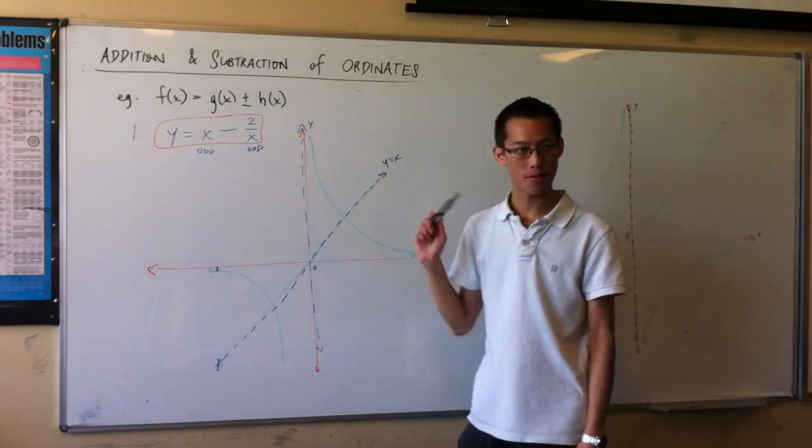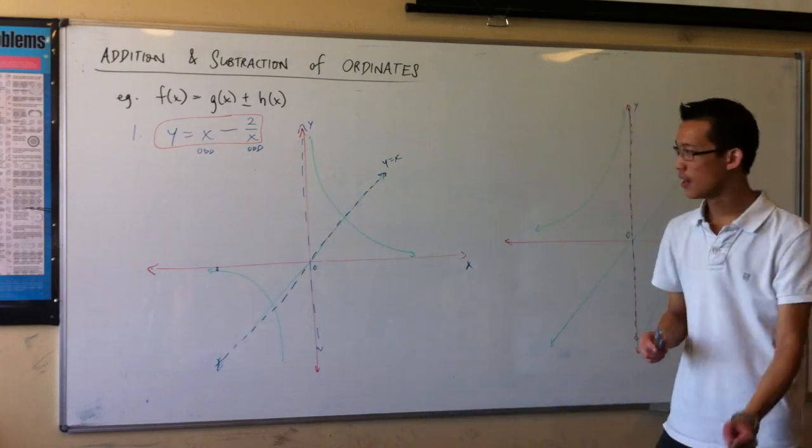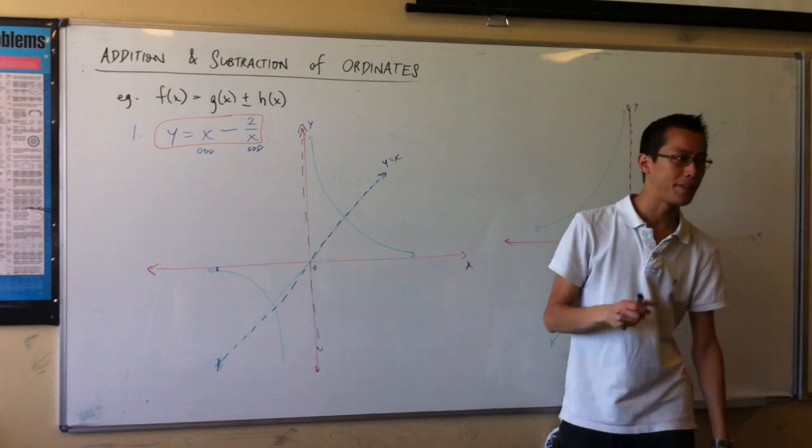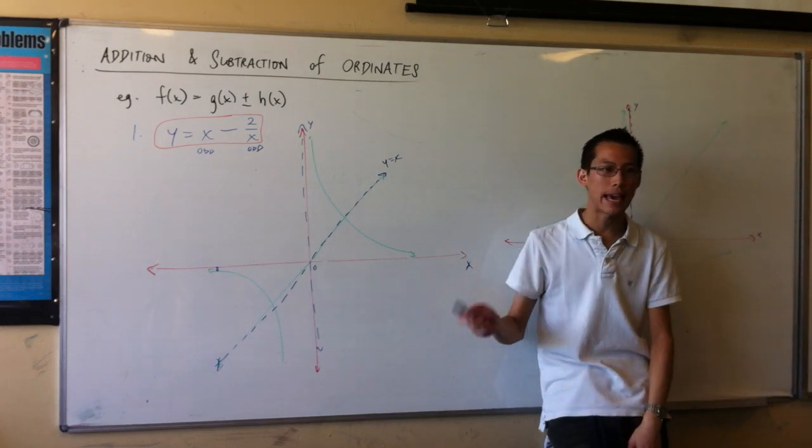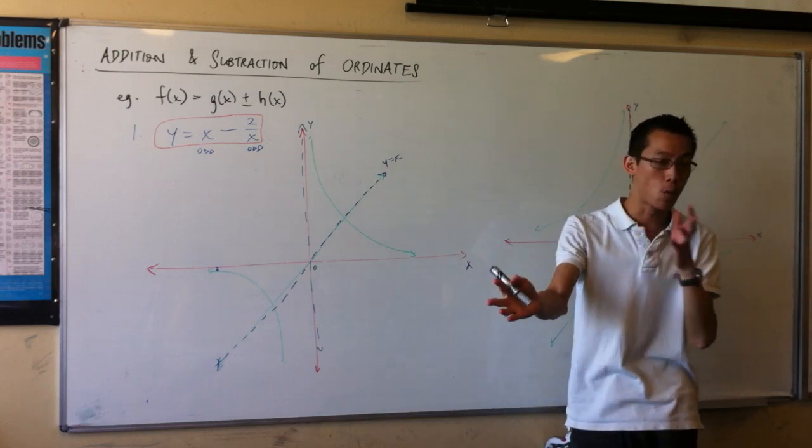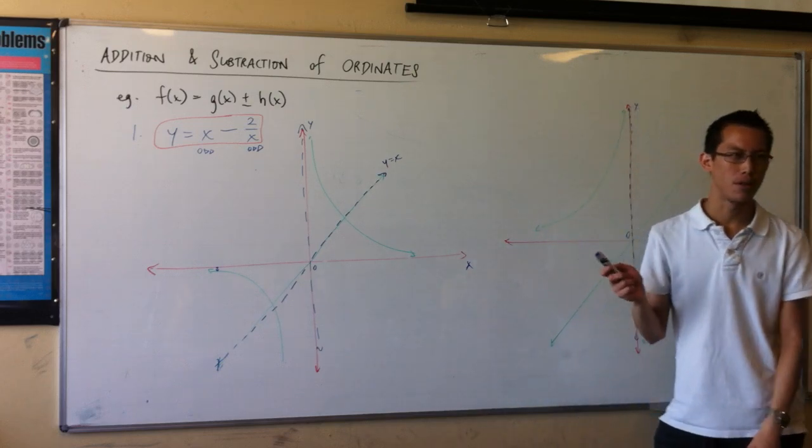We can graph this one, y equals x minus 2 over x, in two ways. I'll show you both. Usually when I show you multiple methods, I sort of tell you I prefer this one over this one. I think this is one of the cases where you really, regardless of whether you prefer one or the other, you've got to learn both.